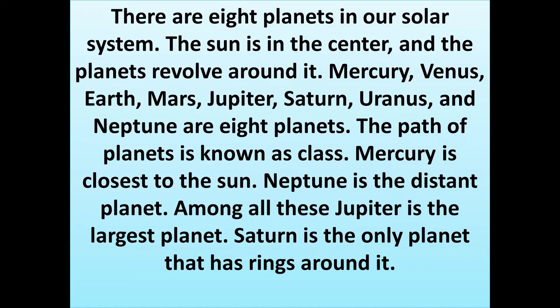There are 8 planets in our solar system. The sun is in the center and the planets revolve around it. Mercury, Venus, Earth, Mars, Jupiter, Saturn, Uranus, and Neptune are the 8 planets. The path of planets is known as orbit. Mercury is the closest to the sun, and Neptune is the most distant planet. Among all planets, Jupiter is the largest. Saturn is the only planet that has rings around it.